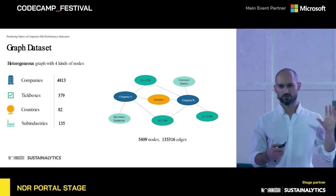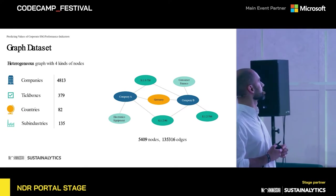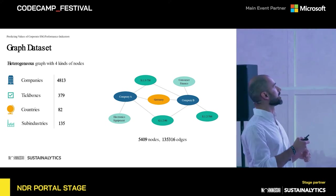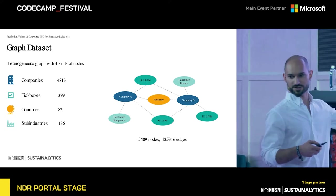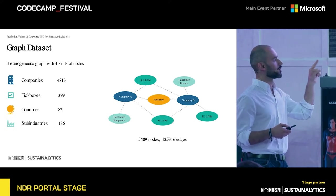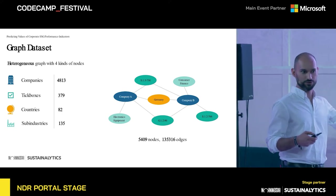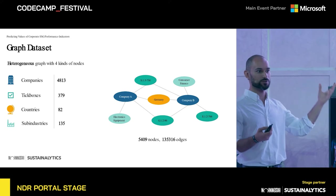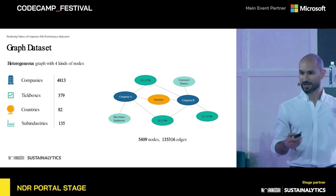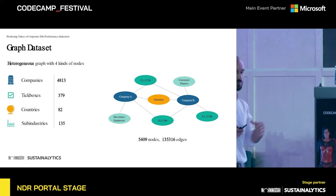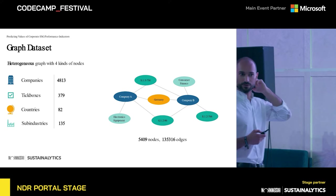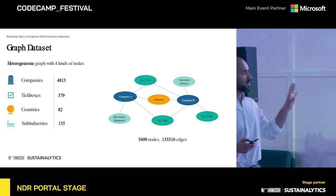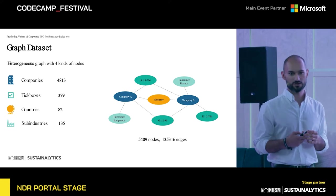Our database consists of four kinds of entities: companies, tick boxes, countries, and sub-industries. We put these entities into a graph as nodes. We connect a company with a tick box node if the tick box has a true value for that company. We connect a company with the country it's incorporated in and with the industries it belongs to. We obtain a graph with different kinds of nodes and different kinds of edges where the edges have different semantics — they look similar but have different meaning. These structures are known in literature as heterogeneous information networks or simply heterogeneous graphs. The graph we built has over 5,000 nodes and over 13,000 edges.